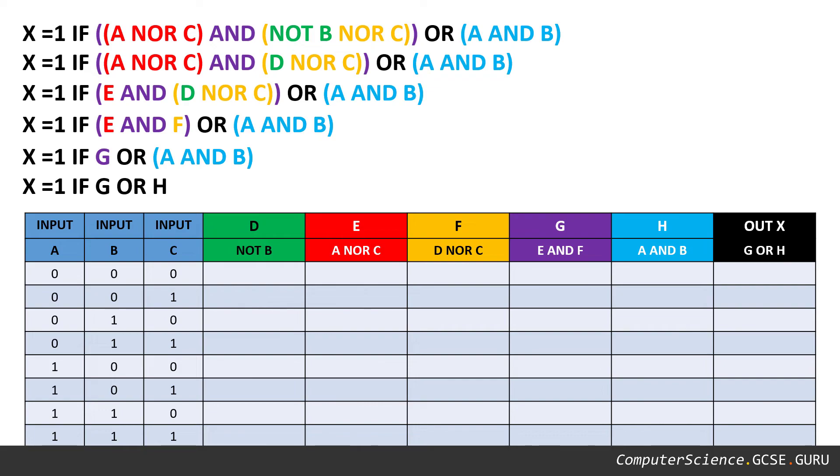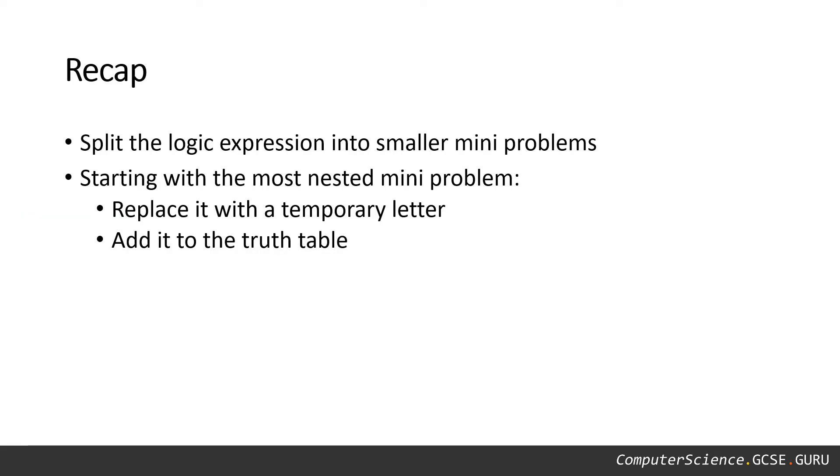So quite a lot of steps, but if you follow it through, it should work. So go to the logic expression, find the most deepest mini problem, convert it into a temporary letter, work your way through those mini problems, and eventually your truth table will be complete. And then you can work on the output.